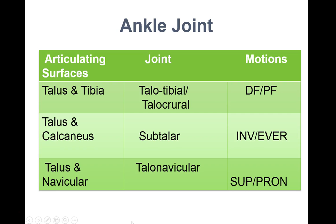Putting those together, the talus and tibia form what we call the talocrural joint, giving us dorsiflexion and plantar flexion. When it articulates with the calcaneus we have the subtalar joint, producing inversion and eversion. And finally, the talonavicular joint with the navicular gives us foot supination and pronation.